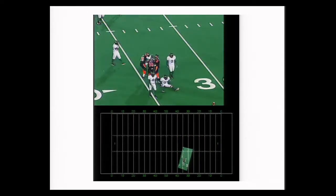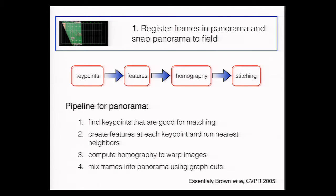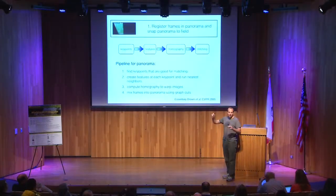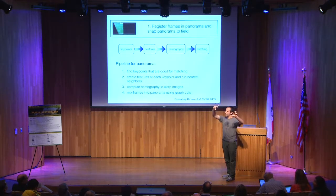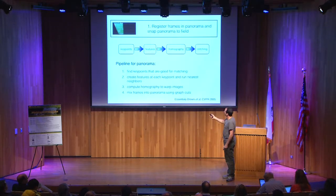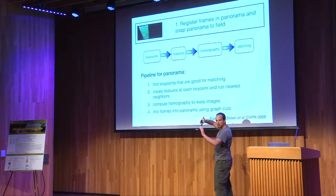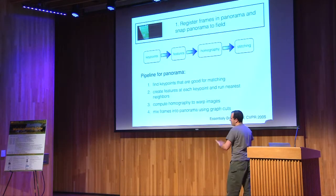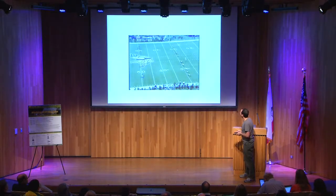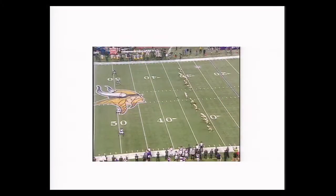Here's actually how that works — we had three stages to do our tracking, and each one of those is a pipeline in itself. It's turtles all the way down. You find what are called key points — little features on the field that are good anchors from one frame to the next. Then you create features and run the nearest neighbors algorithm. Then you compute a perspective transformation to warp the images from one to the other. Then you mix everything together and make a beautiful picture. The main example we're using here is from the last regular season game where Adrian Peterson almost broke the single season rushing record.